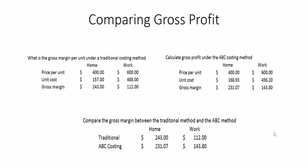Here's our comparison: the gross margin per unit under the traditional costing method for the home tablet was $243. However, under the ABC method, it was $231.07. That difference is entirely due to how we handle overhead application down to a per unit cost. I hope that helps you understand how we get from the cost pool overhead dollars down to a per unit cost and how that can affect your gross margin. If you have any questions, please leave them below.